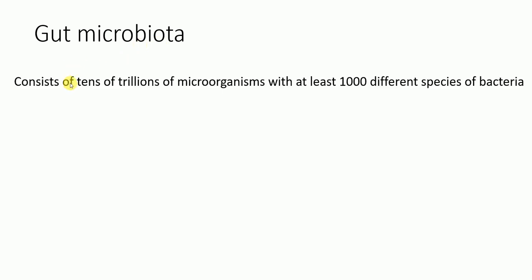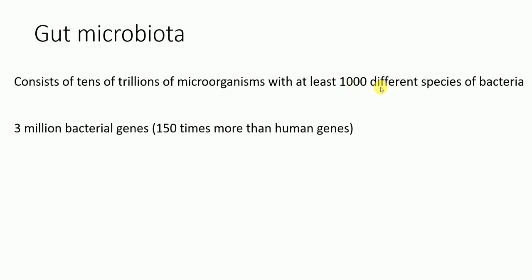The gut microbiota is found in the gut and consists of tens of trillions of microorganisms, with at least one thousand different known species of bacteria. There are three million bacterial genes in the gut, which are 150 times more than human genes. The total microbiota actually weighs up to 2 kg — that is a lot of microorganism mass given their tiny individual size.